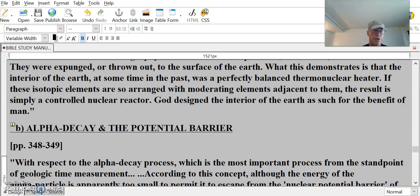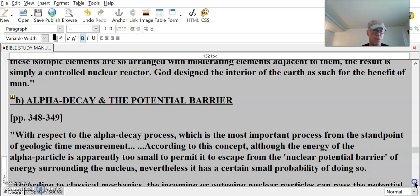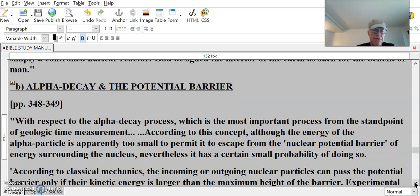Another kind of radiation: radiometric dating or measurement of age, alpha decay and the potential barrier. Dr. Patton goes on to say, with respect to the alpha decay process, which is the most important process from the standpoint of geologic time measurement,